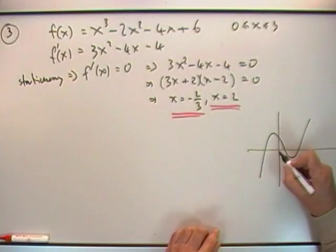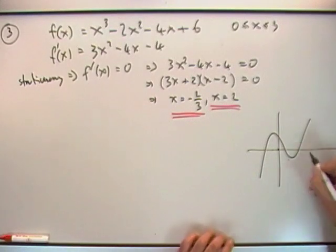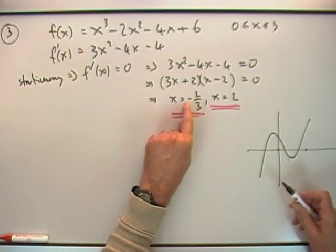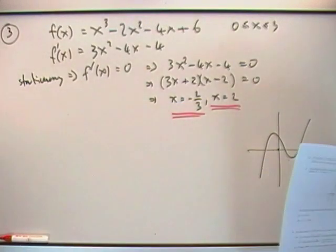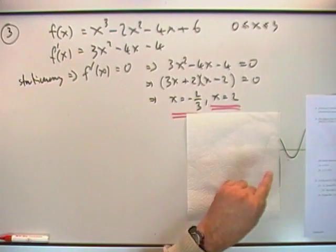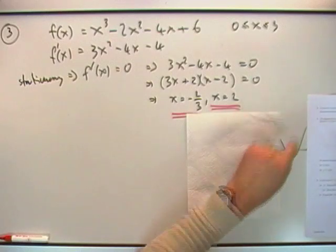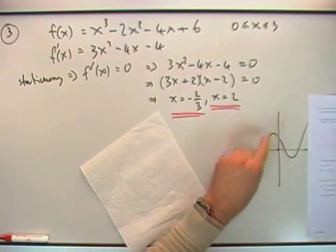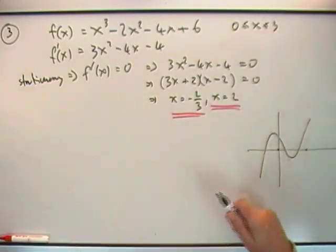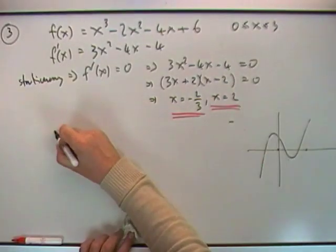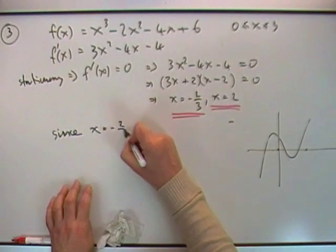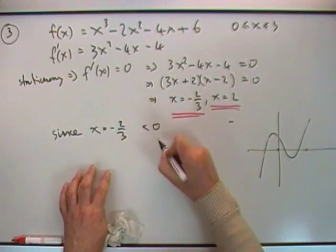You're going from 0 to 3, which means that this turning point is irrelevant because you're only wanting the maximum and minimum values in this window. They would either occur at the boundary or any turning point in between. Since x equals -2/3 is less than 0...